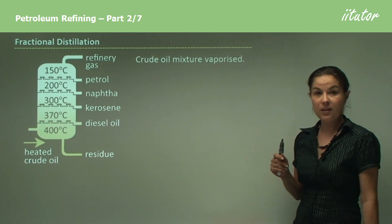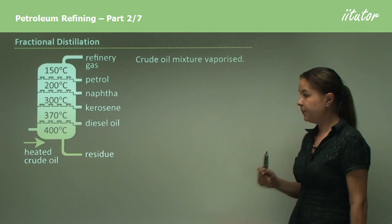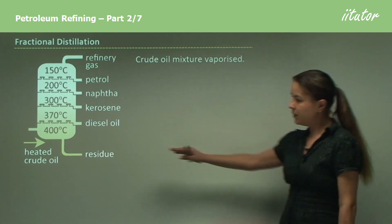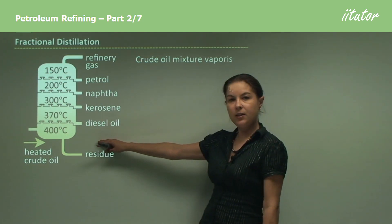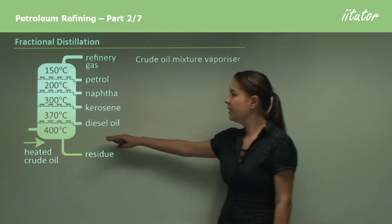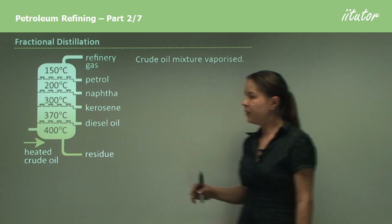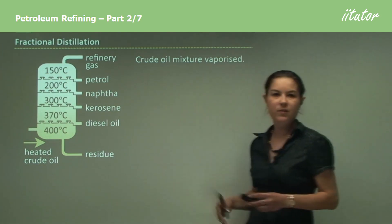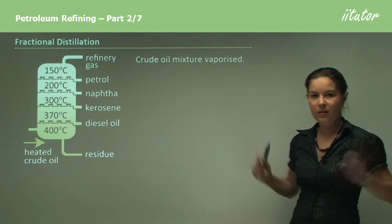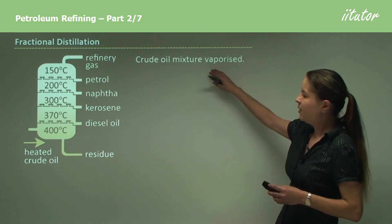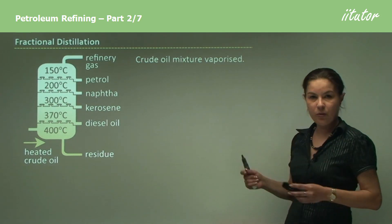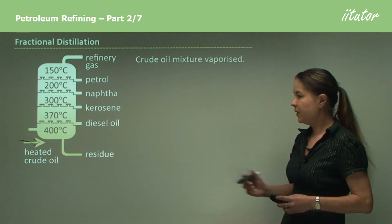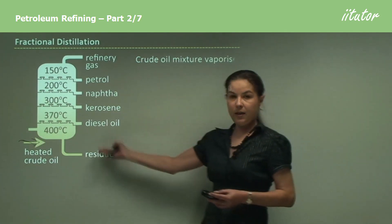Looking at a fractional distillation column — this is quite a crude diagram — but if you imagine a fractional distillation column in industry, these things are absolutely massive. You could imagine maybe the size of a silo. They're very, very large. What happens is crude oil is brought into the fractional distillation column and it's then heated up.